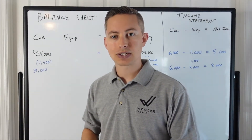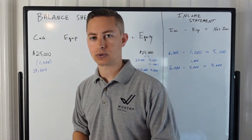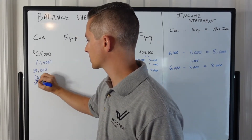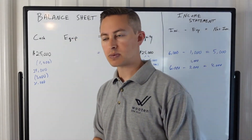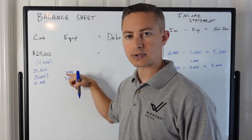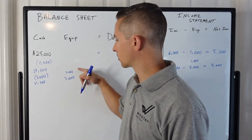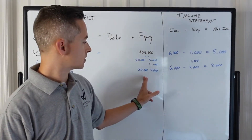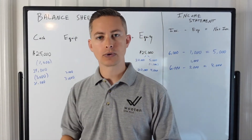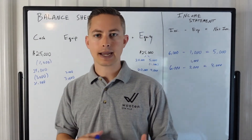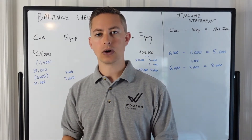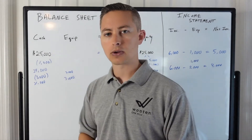For depreciation, the tax code says you have to capitalize the asset and expense it over time instead of writing it all off in one year. So if you buy a computer for $3,000, you subtract that from your bank account, but instead of putting $3,000 of expense on your income statement, you put it on the balance sheet as an asset. Cash reduces to $21,000 and equipment increases to $3,000 — the balance sheet stays in balance. For a computer, the useful life is three years.